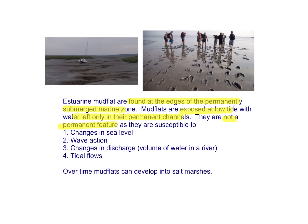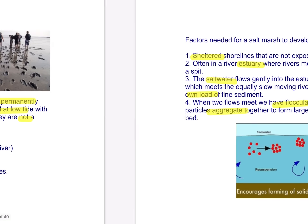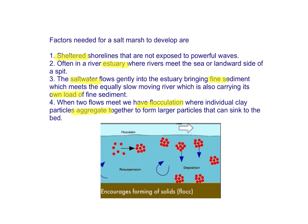Mudflats are found at the edges of permanently submerged marine zones. They're susceptible to changes in sea level, wave action, volume of water in the river, and tidal flows. Over time, these mudflats develop into salt marshes — so if you're asked to explain salt marshes in the exam, it might be wise to draw mudflats first. Factors needed for a salt marsh include a sheltered shoreline, a river estuary, salt water, lots of fine sediment, and two flows meeting — the river and the sea.